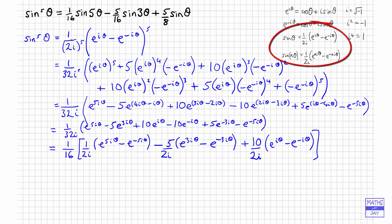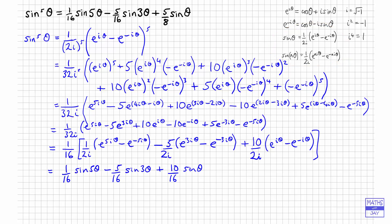So we've got one sixteenth of sine 5 theta, then minus 5 sixteenths of sine 3 theta, and then 10 sixteenths of sine theta. And of course 10 sixteenths is 5 eighths. So that is what we were asked to prove. The last line just changes 10 sixteenths to 5 eighths.